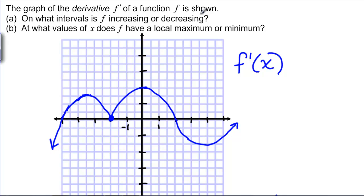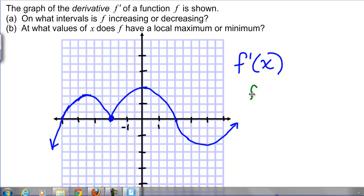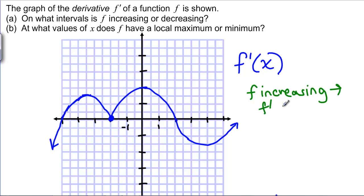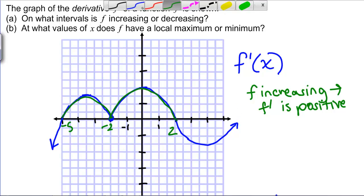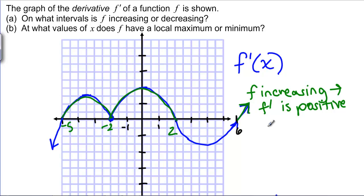The problem asks us first on what intervals F is increasing and decreasing, and then on what values of X does F have a local maximum or local minimum. F is increasing whenever F-prime has a positive Y-value. Looking at the graph, the Y-value is positive from negative 5 to 2, and then from 6 to infinity. So F is increasing on those intervals.